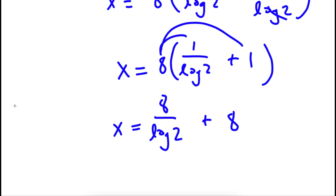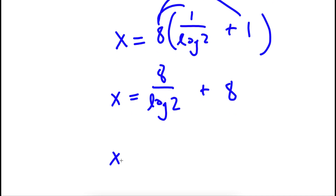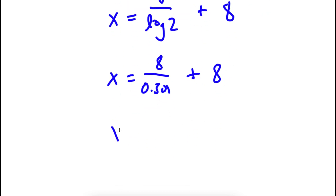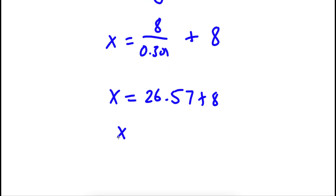Distributing the 8, I get x equals 8 over log 2 plus 8. Since log 2 is approximately 0.301, I have 8 over 0.301 plus 8, which equals approximately 26.57 plus 8. So my final answer is x is approximately 34.57.